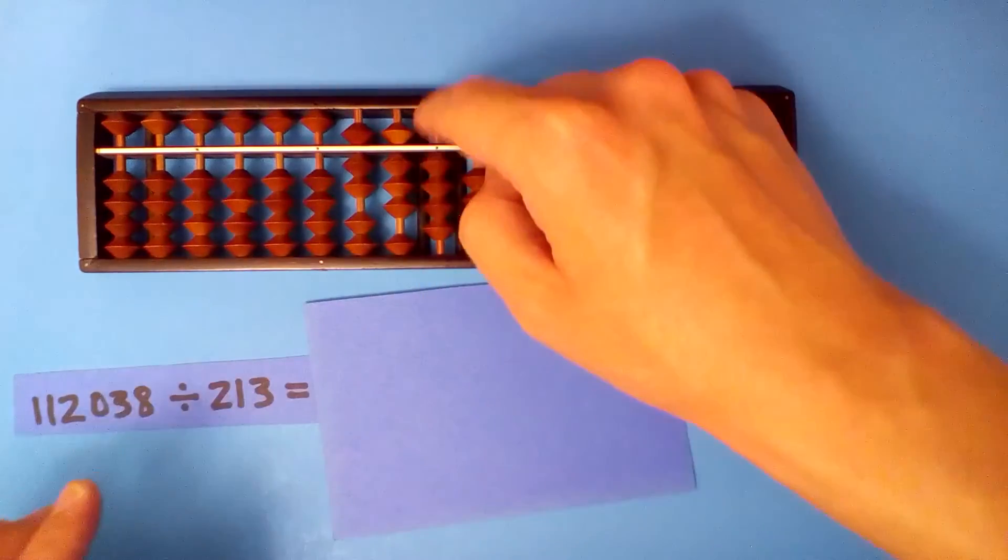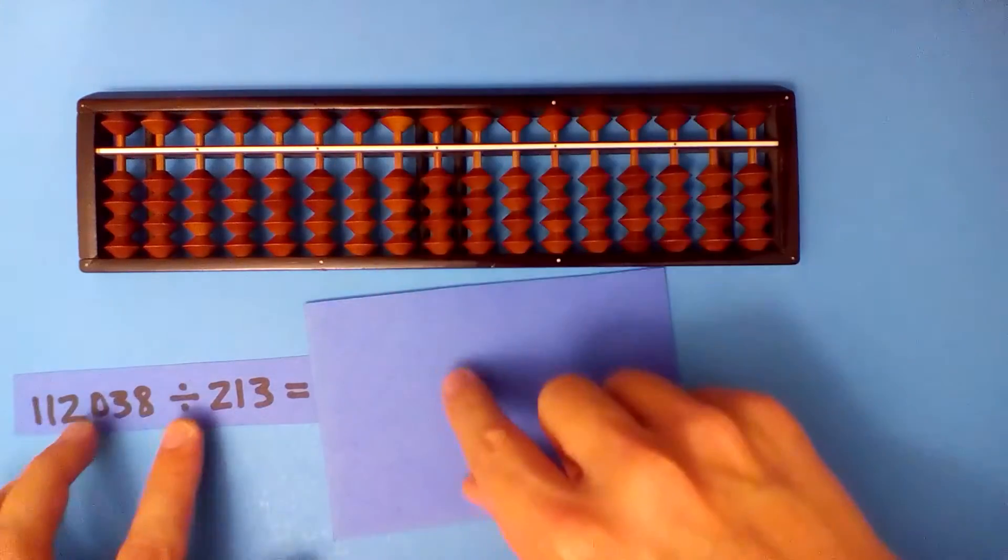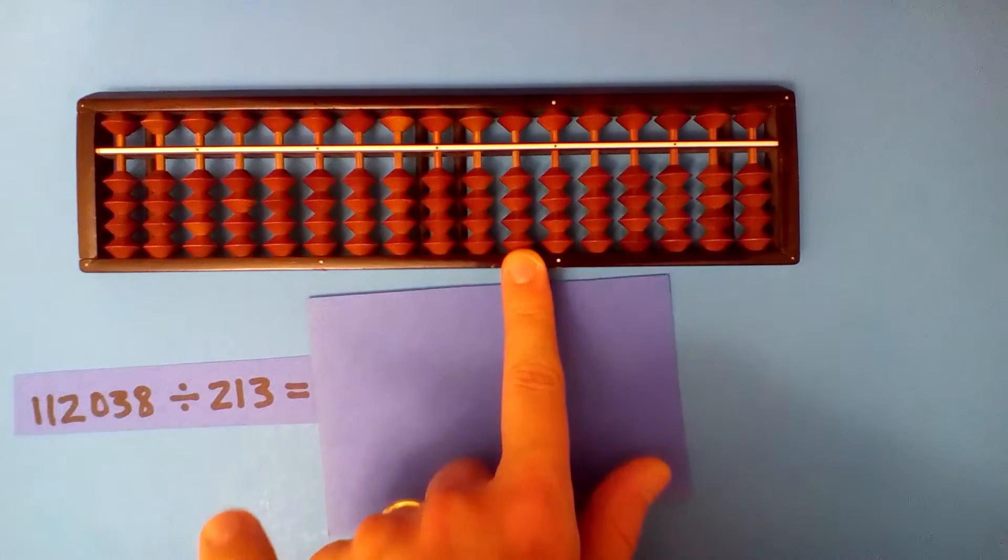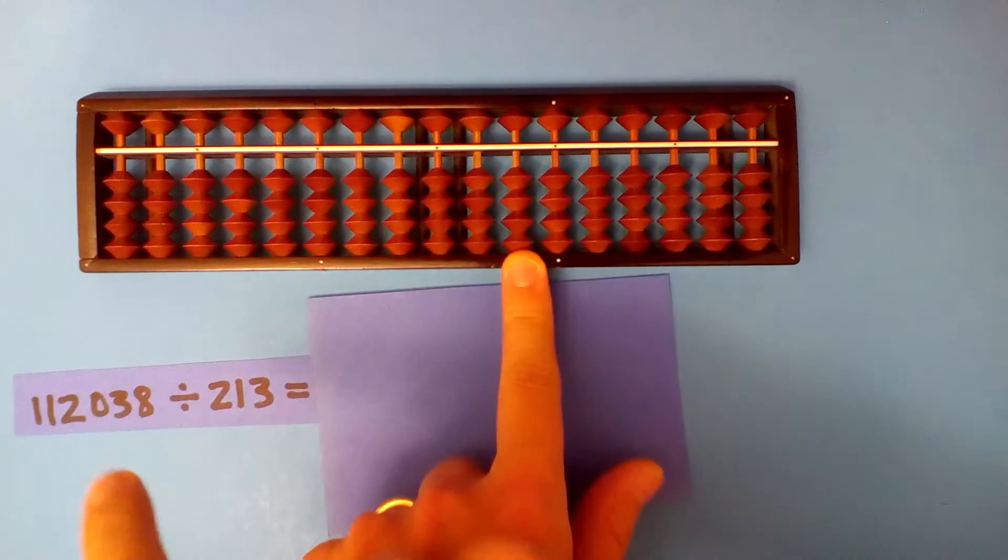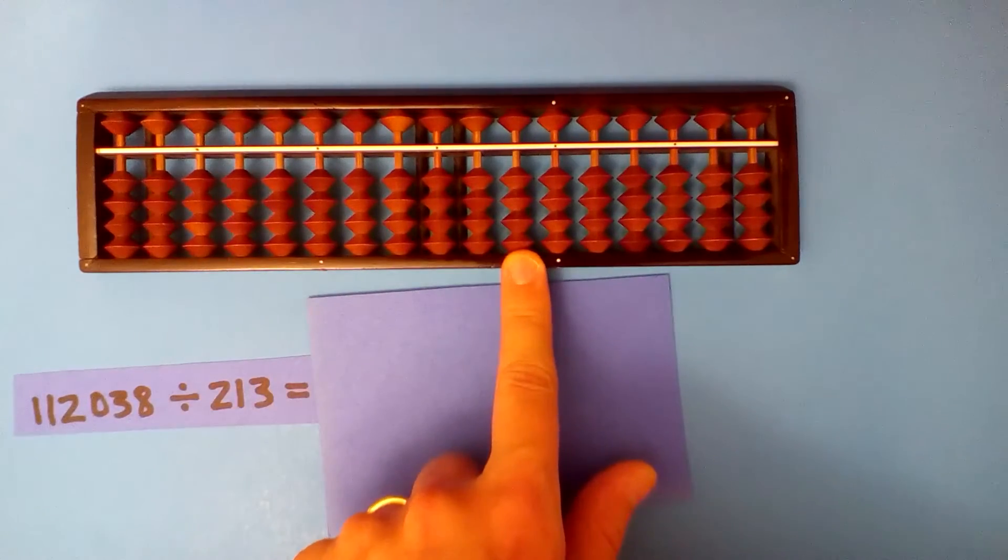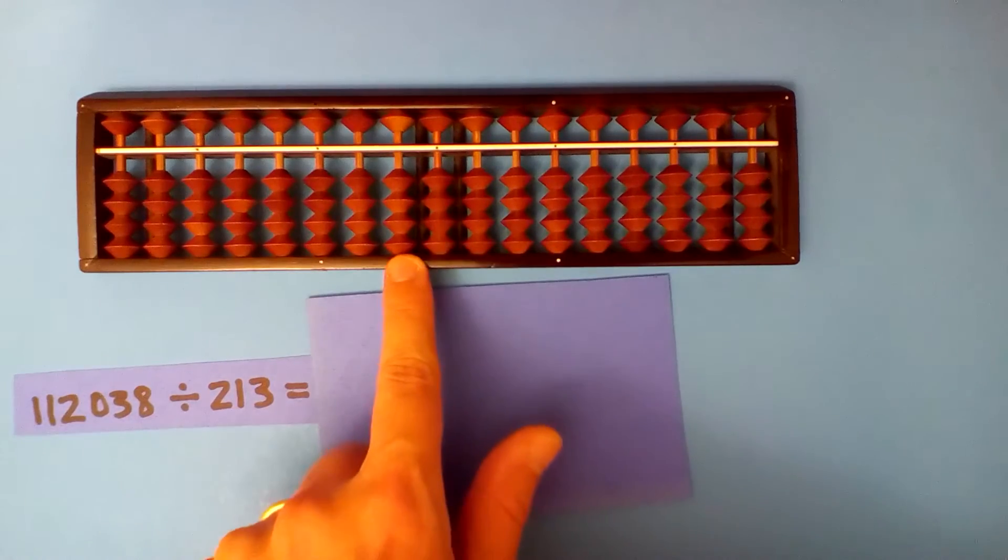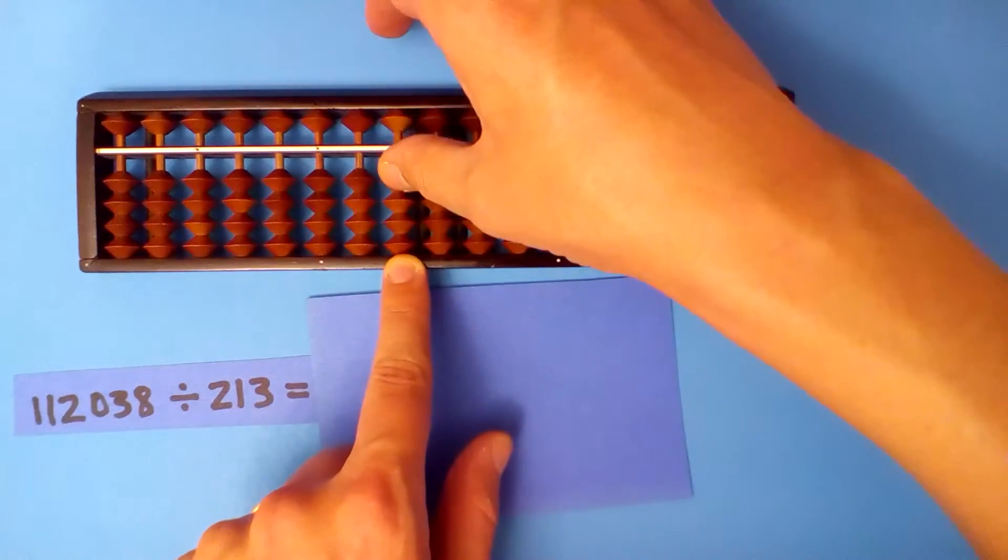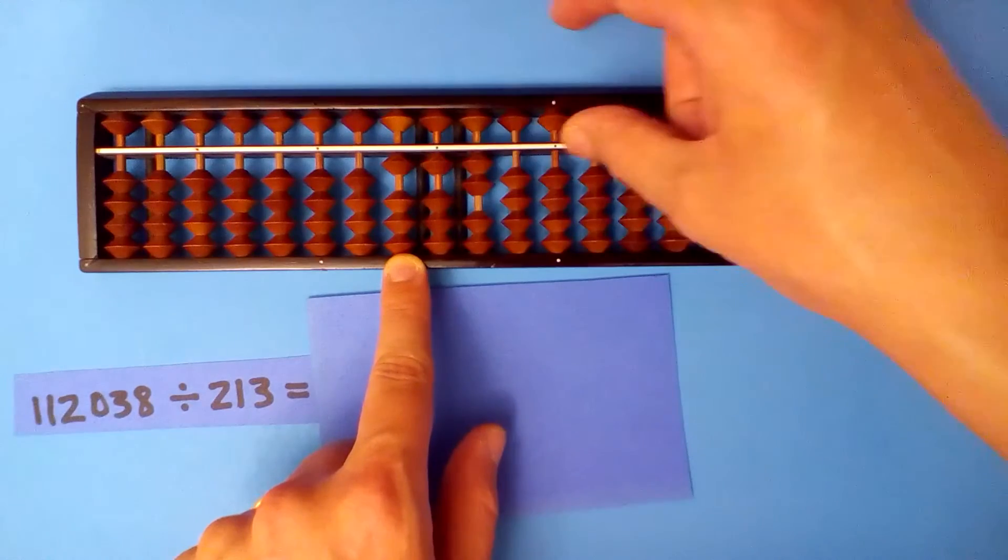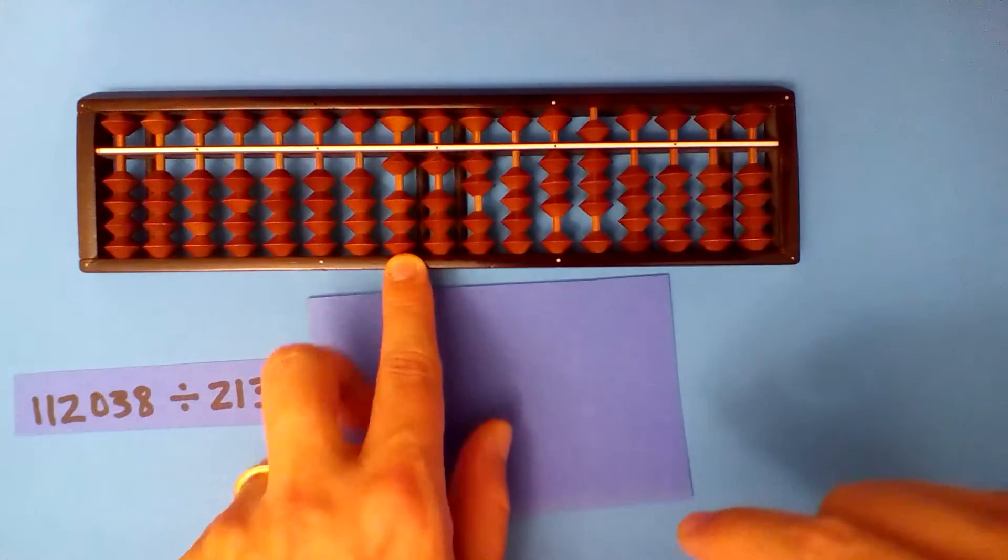Next. Start on the hundreds, but there are three more digits in the dividend: one, two, three. Set up our dividend here 112038 and divide.